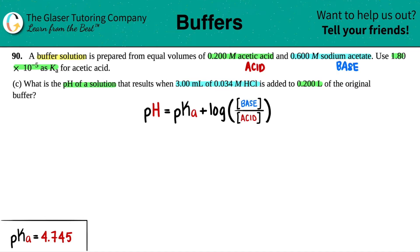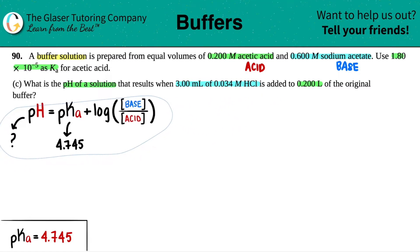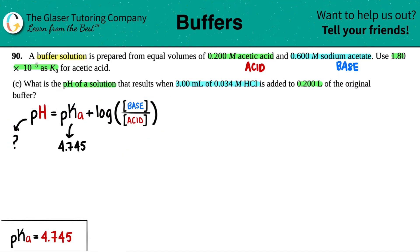We already established that the acetic acid is literally the acid and the sodium acetate is the base. Now we're still looking for that pH. From part A and B from the last video, we found that the pKa value of this solution was 4.745, so we don't have to do that over again. But now, since we're adding HCl to our buffer, these base and acid values are going to change.